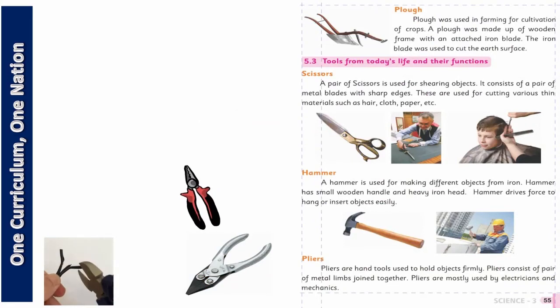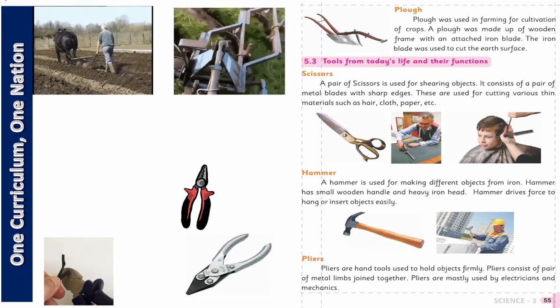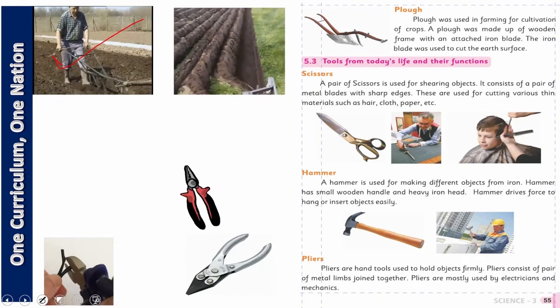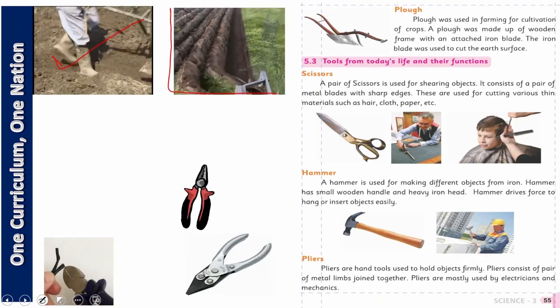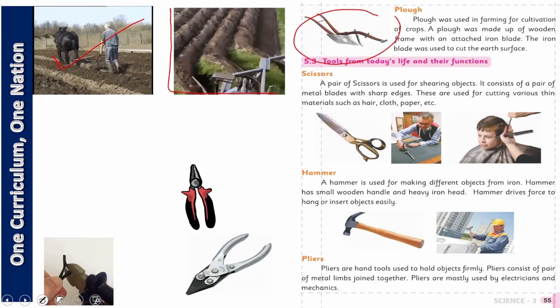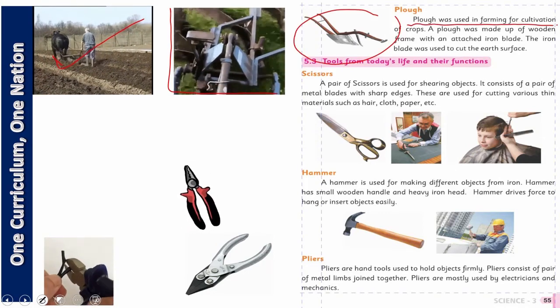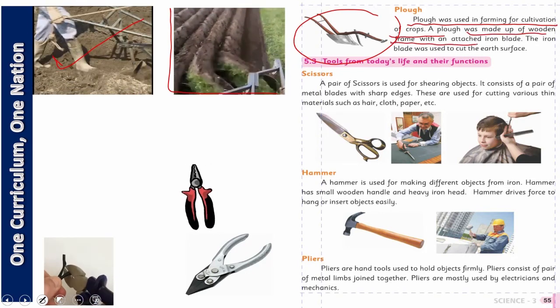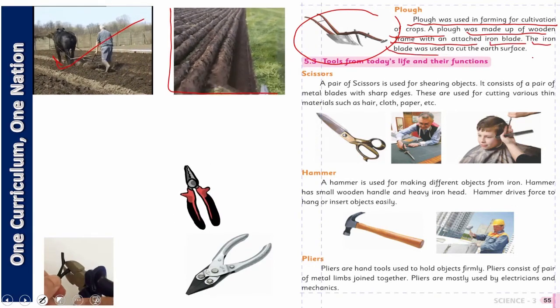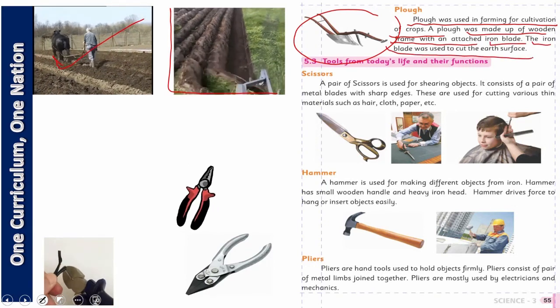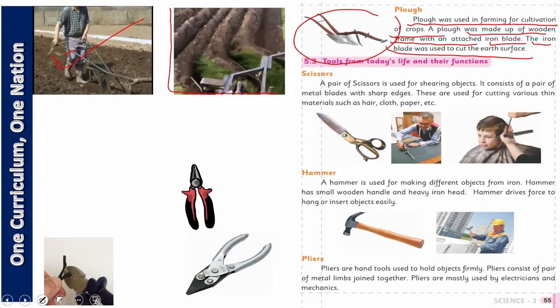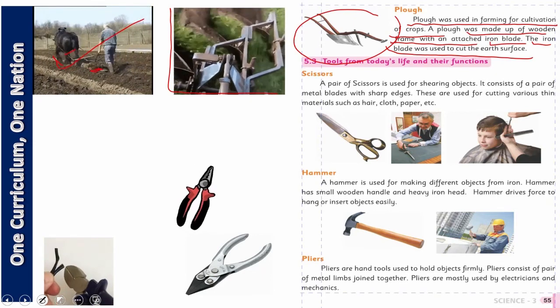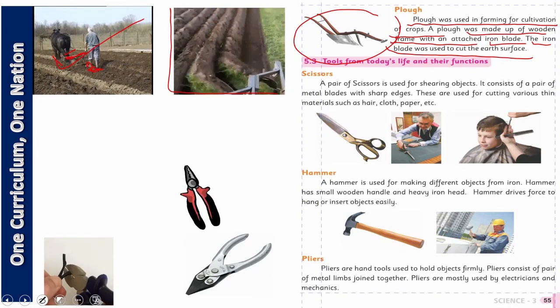And the last but not the least one is plowing. As I told you before, this was plowing done by animals and human beings but today this is changed by tractor. What is this? This is plow. Plow was used in farming for cultivation of crops. A plow was made up of wooden frame with an attached iron blade. The iron blade was used to cut the earth's surface. Here at the front - I will show you again in the next class.